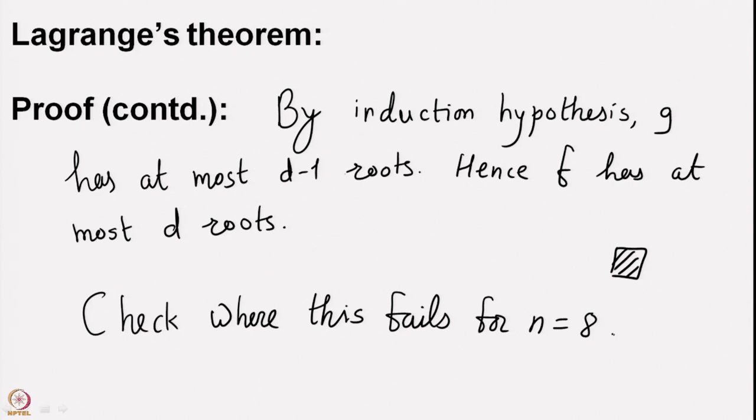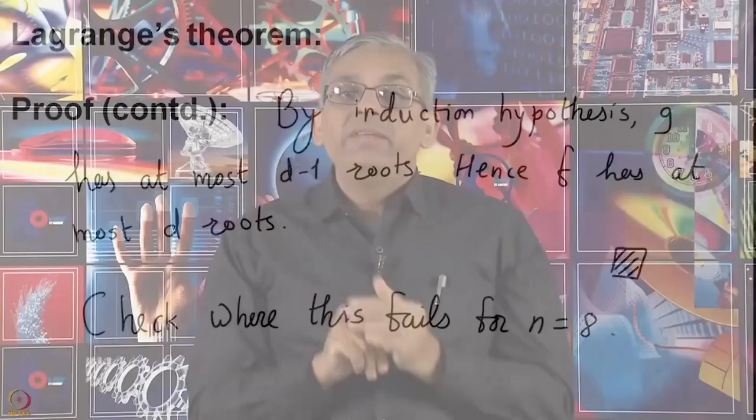So we have proved Lagrange's theorem: whenever you have a polynomial of degree d over Z/pZ, such a polynomial can have at most d roots, counting roots distinctly. If roots come with multiplicity then the count further goes down, but we will not worry about that. There is one very nice corollary of this result.